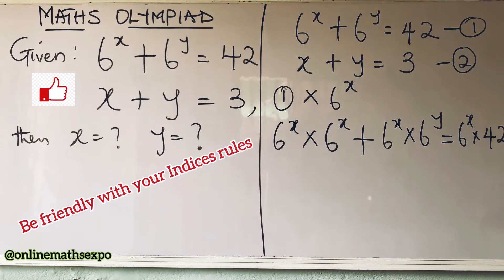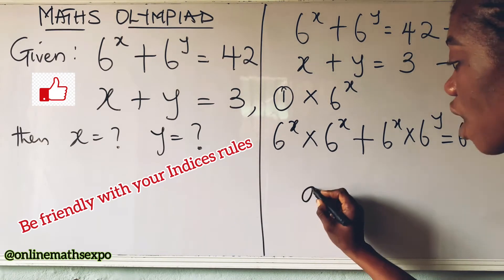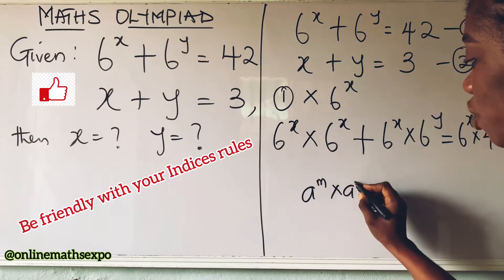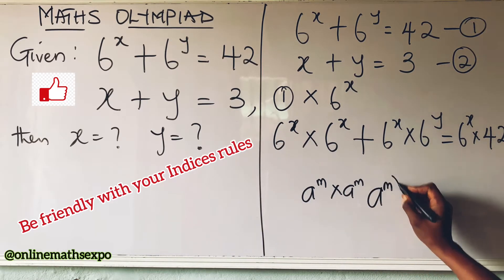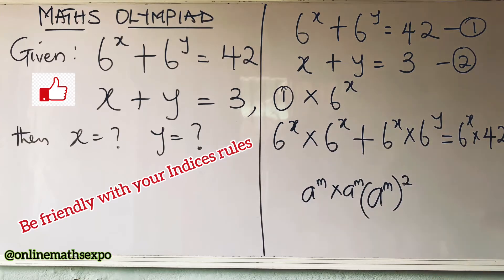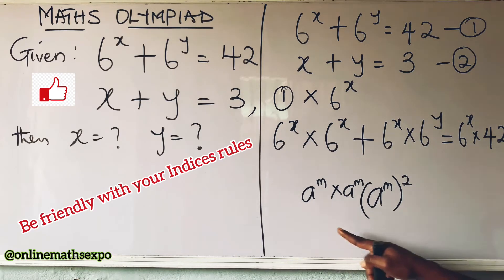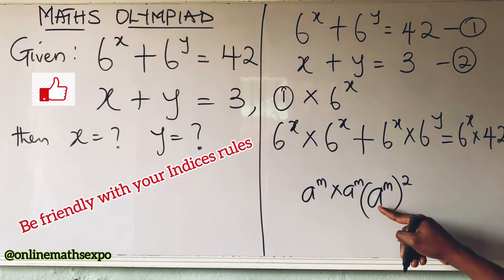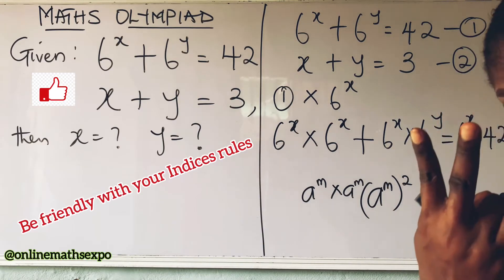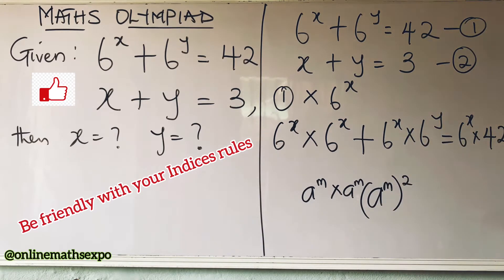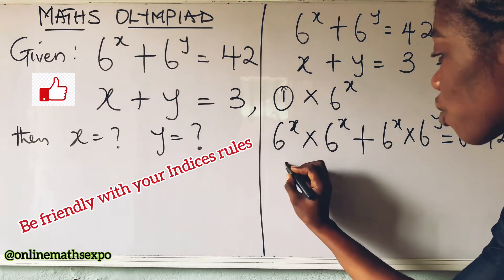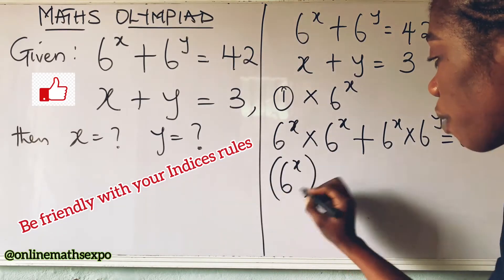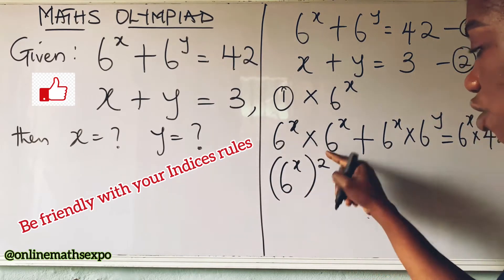Now, remember: if you have a raised to power m multiplied by a raised to power m — since they are the same — you can write it as a raised to power m, all raised to power 2. So for the first term, we get 6 raised to power x, all raised to power 2.